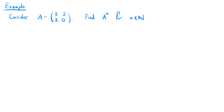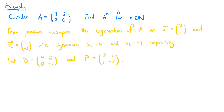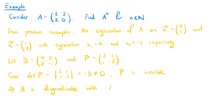For the second example, we consider the matrix A equals [3, 2; 2, 0]. We want to find A to the power n for any positive integer n. From previous examples, the eigenvectors of A are V1 equals (2, 1) and V2 equals (1, negative 2), with eigenvalues λ1 equals 4 and λ2 equals negative 1 respectively. Let D be the matrix [4, 0; 0, negative 1] and P be the matrix [2, 1; 1, negative 2]. Since the determinant of P equals negative 5, which is non-zero, P is invertible. That means A is diagonalizable with A equals P times D times P inverse.